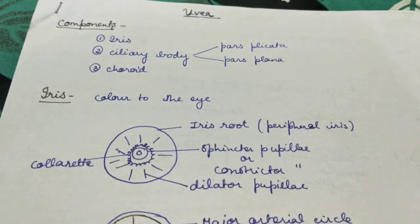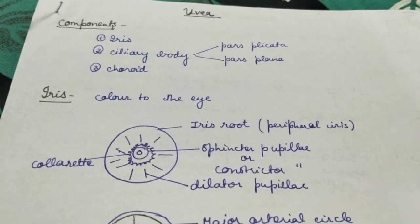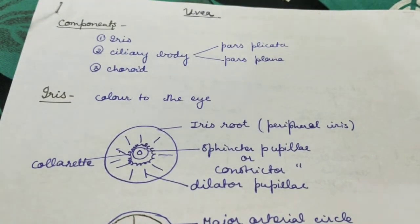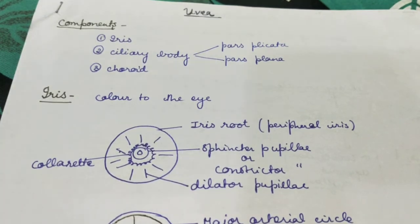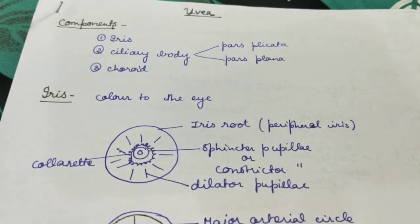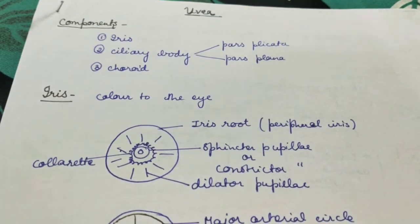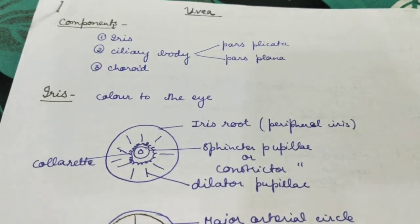Today we will learn about the anatomy of the uvea. The uvea or uveal tract is comprised of three structures: the iris, ciliary body, and the choroid.